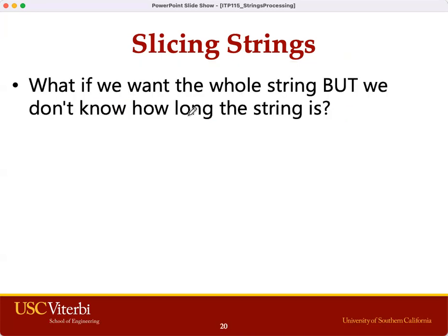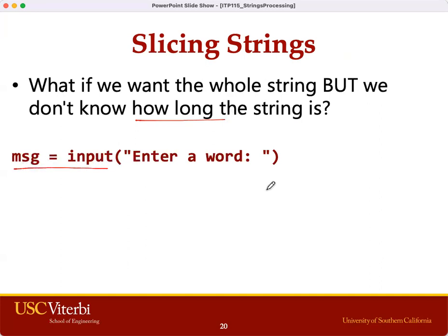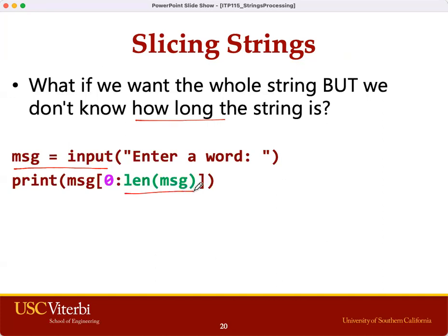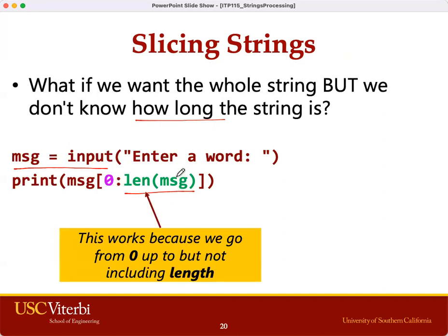In cases where we don't know how long the string is — for example, when we are asking the user to type in an input, and the user can type in 'hello', 'spamalot', or anything else — how are we going to get a slice of the entire string? We can substitute the end position with the length function. The length function returns how many characters are in that string. For 'spamalot', the length is 8, so the slice from 0 to 8 gives us all the characters from 0 up to 7, which is the entire word.